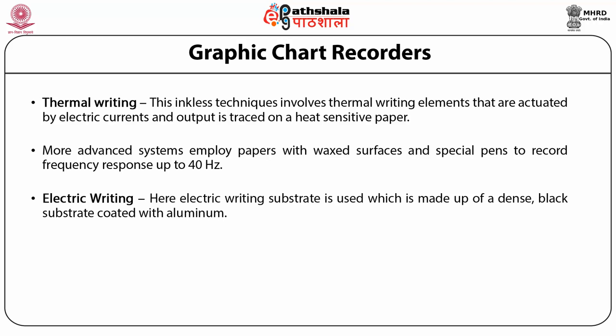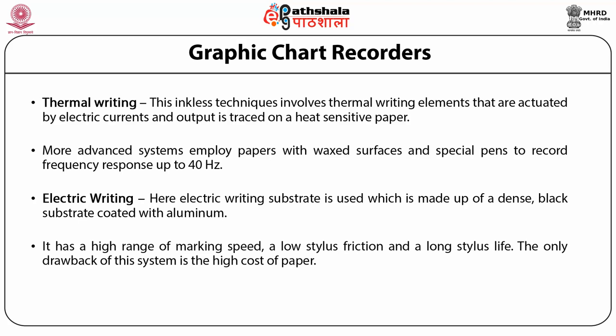D. Electric writing: A substrate made of a dense black material coated with aluminum is used. A tungsten wire stylus is kept in light contact with the aluminum surface. When voltage is applied, aluminum is etched and the black substrate is exposed. A minimum of 35 V DC is applied at a frequency of 8 Hz to avoid possible grounding via the aluminum chart. It has a high range of marking speed, low stylus friction, and long stylus life. The only drawback is the high cost of paper.